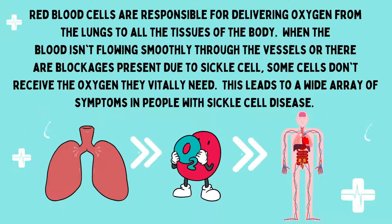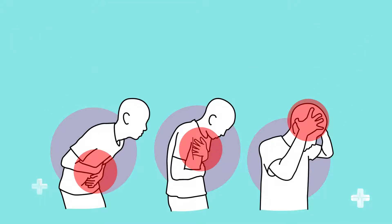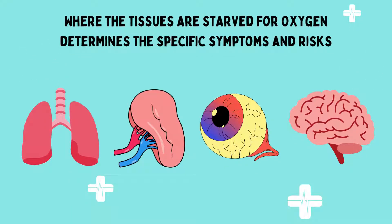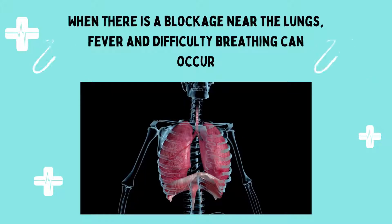This leads to a wide array of symptoms in people with sickle cell disease. The oxygen-depleted tissues cause repeated episodes of sharp, stabbing pain, which can be unpredictable in severity and duration. The location of the tissues affected determines the specific symptoms and risks. When blood flow to the lungs is obstructed, there can be fever and difficulty breathing.